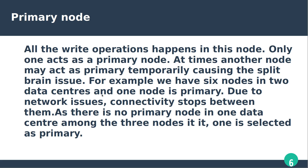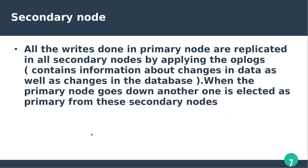Another node may act as primary temporarily, causing a split-brain issue. For example, if you have six nodes across two data centers and a network issue stops connectivity between them, there is no primary in one data center, so among those three nodes, one is elected as primary.